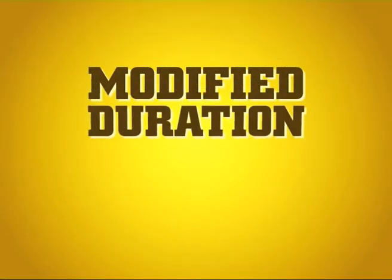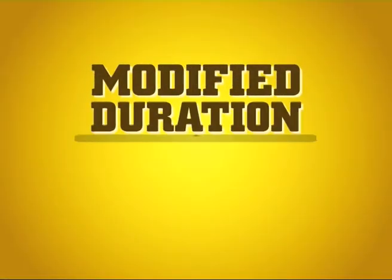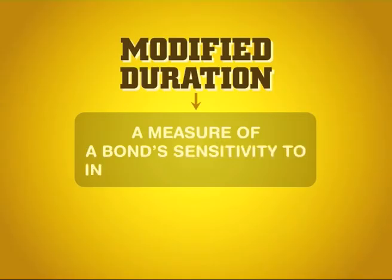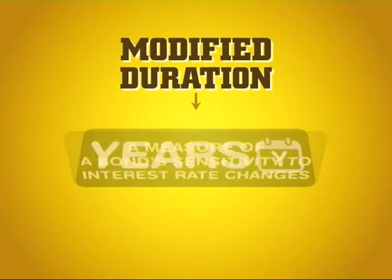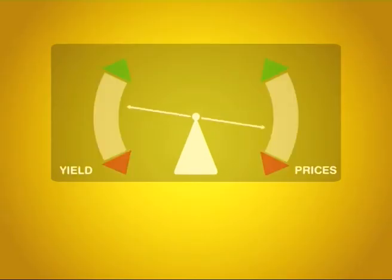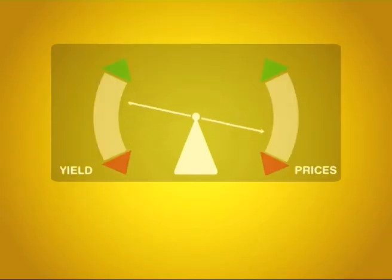What is modified duration? Modified duration is a measure of a bond's sensitivity to interest rate changes. It is indicated in years and shows the percentage change in the bond's price for every 1% change in yield.